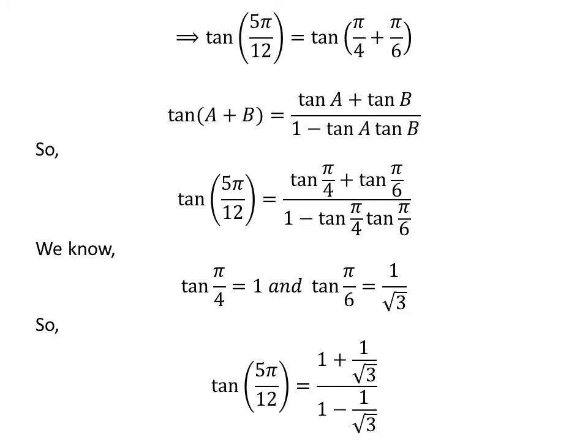Plugging the above values into the equation for tangent of 5 times pi upon 12 gives us tangent of 5 times pi upon 12 is equal to 1 plus 1 upon square root of 3, upon 1 minus 1 upon square root of 3.